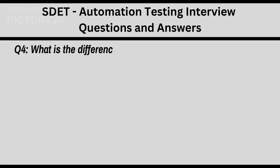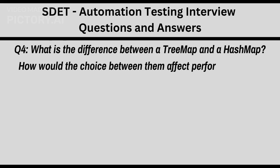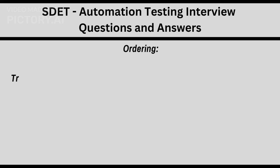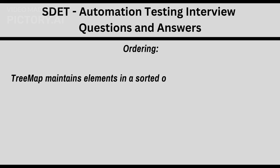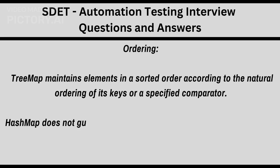Q4: What is the difference between a TreeMap and a HashMap? How would the choice between them affect performance in an automation framework? Ordering: TreeMap maintains elements in a sorted order according to the natural ordering of its keys or a specified comparator. HashMap does not guarantee any specific order of its elements.